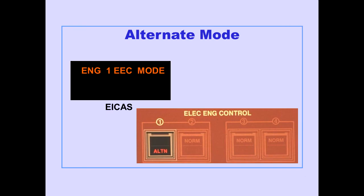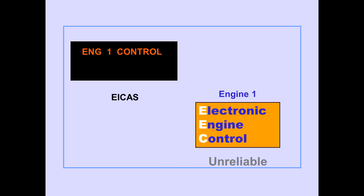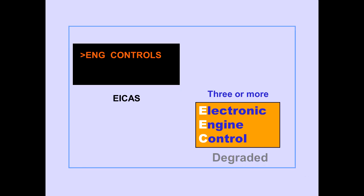The ICAS advisory message 'engine EEC mode' is displayed when control is in the alternate mode, and the EEC alternate mode light also illuminates. The ICAS caution message 'engine limit protection' is displayed when the EEC is in the alternate mode and command N1 exceeds the maximum rating. The ICAS advisory message 'engine control' is displayed if one engine EEC is not fully functional. The EECs have redundant systems; a loss of redundancy may degrade EEC operation. If three or more EECs are operating in this degraded condition, the ICAS advisory message 'engine controls' is displayed.